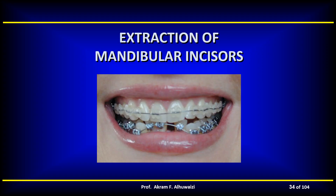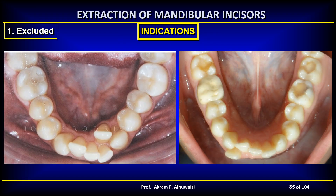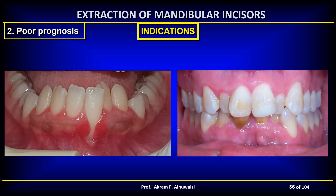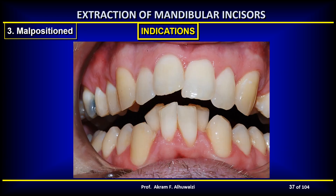Indications for extraction of a lower incisor include when one incisor is completely extruded from the arch and there are satisfactory proximal contacts between the other incisors — so if you extract this tooth it won't be missed. Another indication is poor prognosis as in the case of trauma, caries, or bone loss. Severely malposed incisors are also an indication.